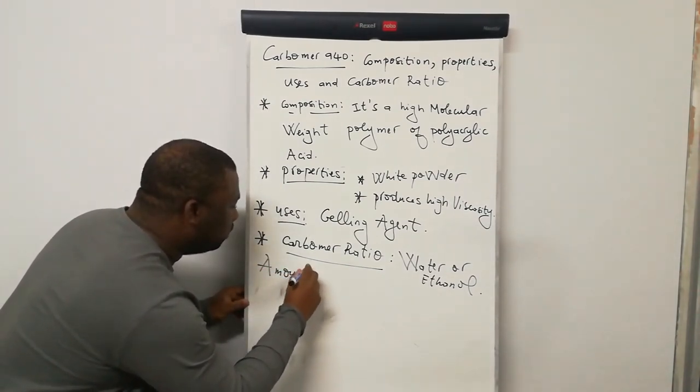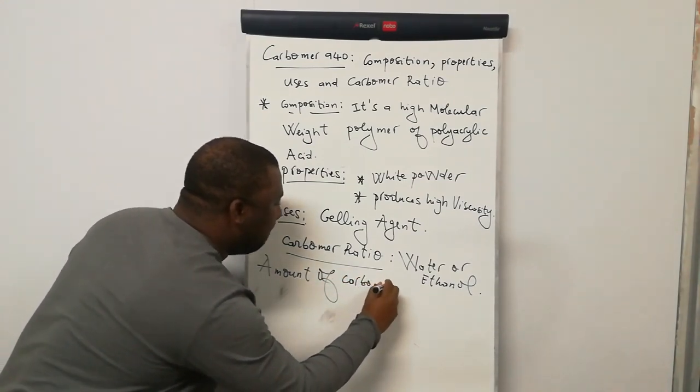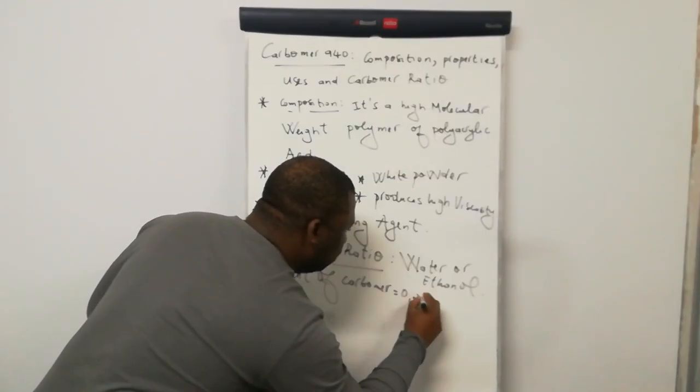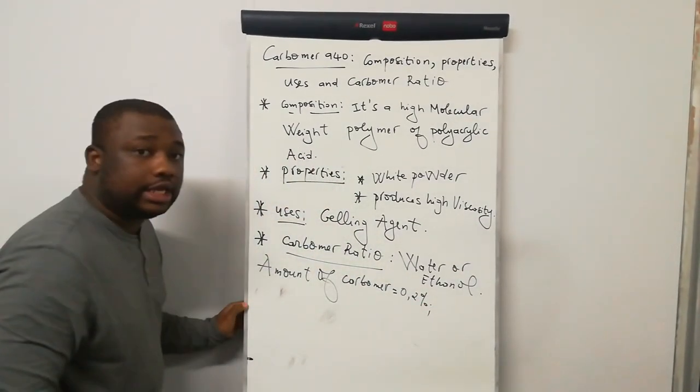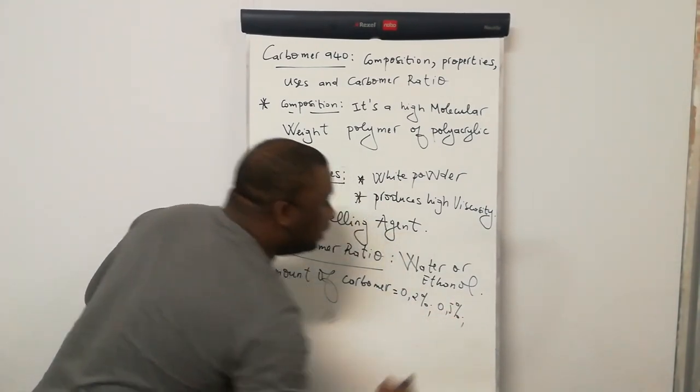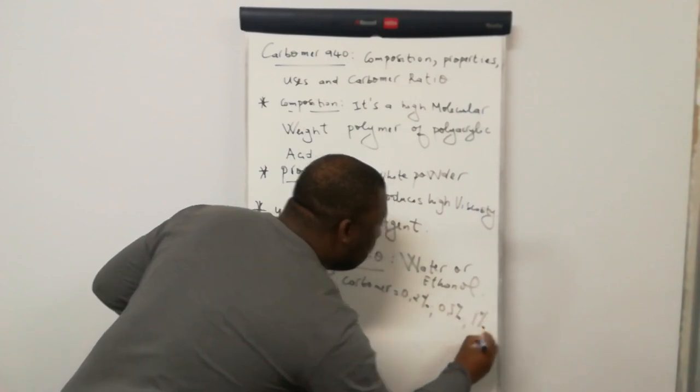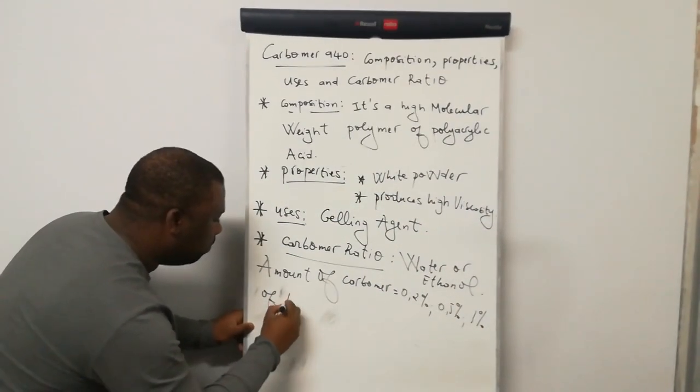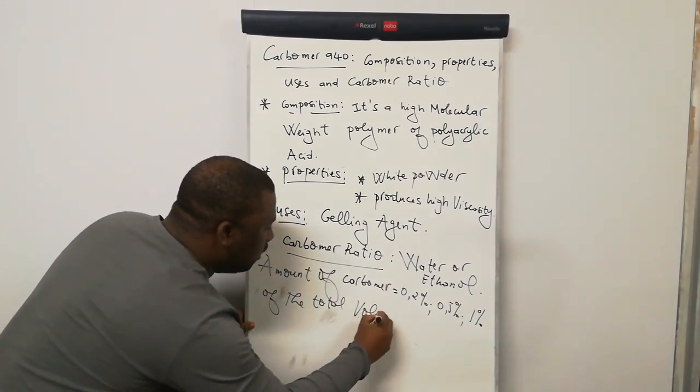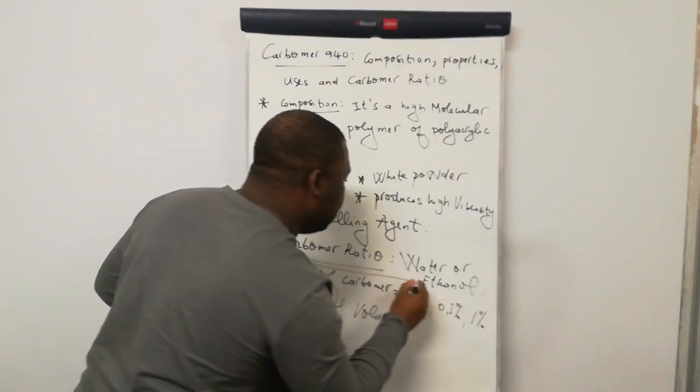Let me write this down. So amount of Carbomer should be 0.2% or 0.5%, some people even go up to 1% of the total volume.